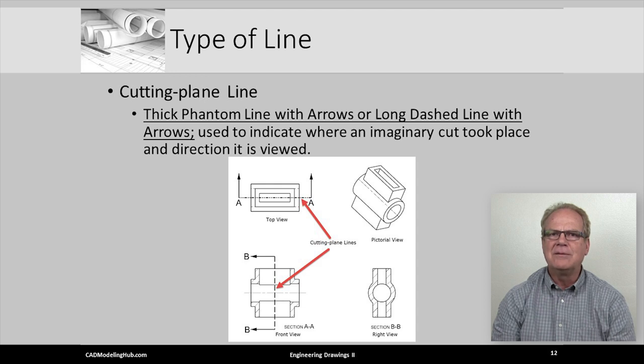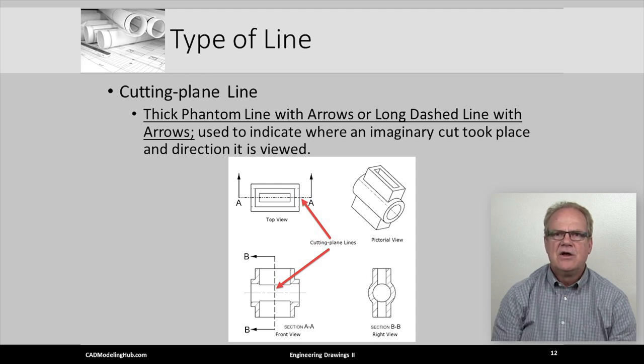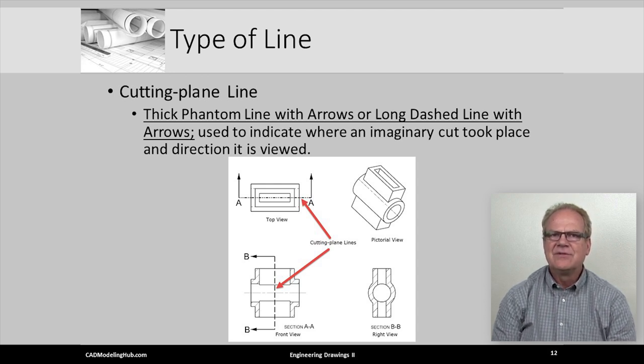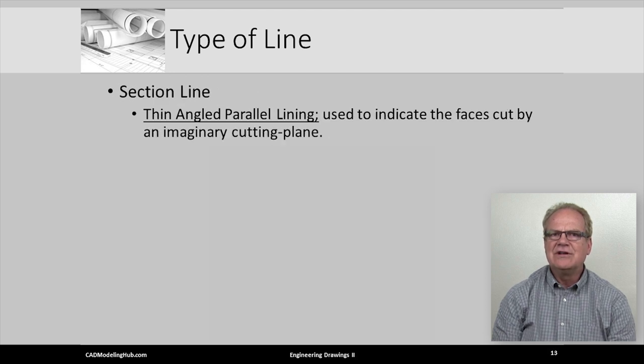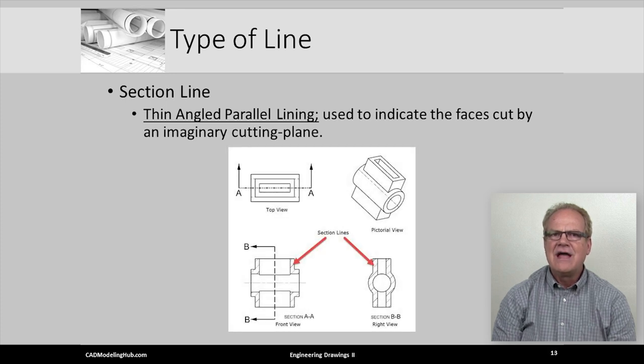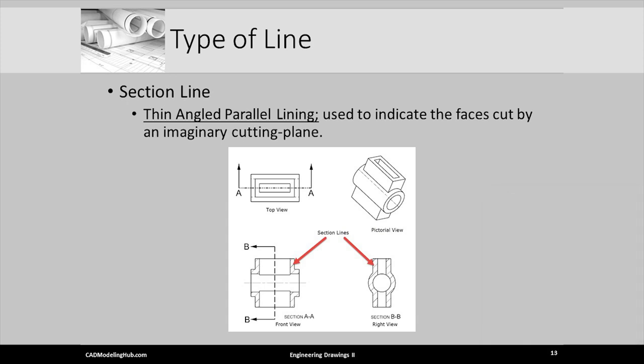Cutting plane lines are used to indicate where a cut has been taken to expose internal features of a part being drawn in a projected orthographic view. To help illustrate what surfaces have been cut, exposed, in the projected orthographic view, it is appropriate to show lining, sometimes called cross-hatching, of these cut or section surfaces. This is done by using section lines where the default pattern is thin, angled, parallel lines, as shown in this feature. However, the graphic standards define many different patterns based on the material the part is made from.